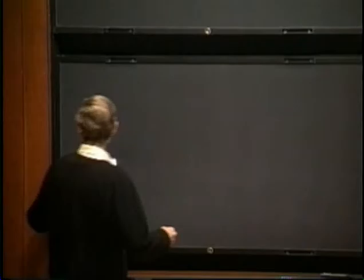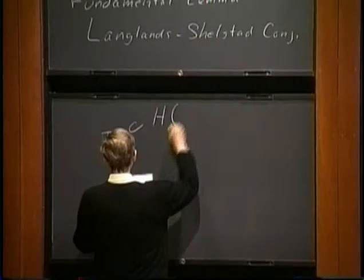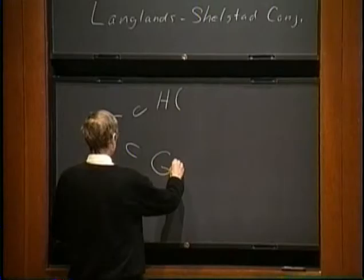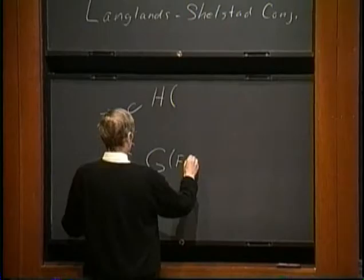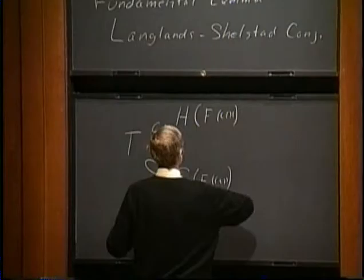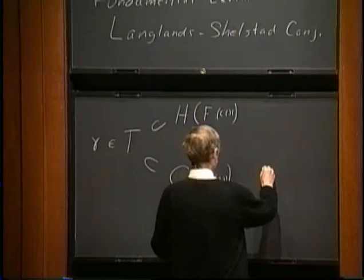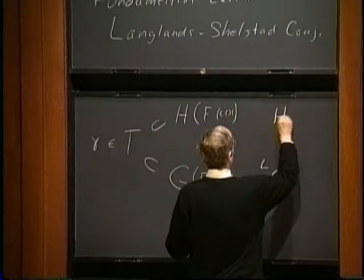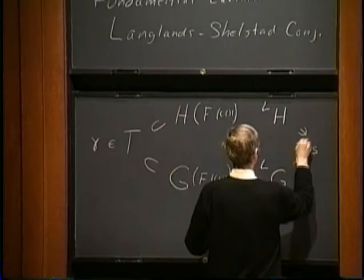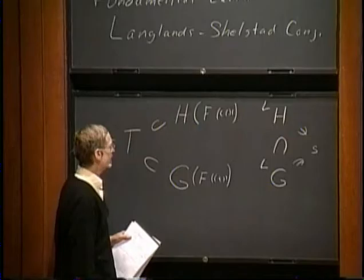The fundamental lemma refers to a situation like this: in our case we have a couple of groups G and H, with H called the endoscopic group. They're defined over a function field. They share a torus in common, and that torus has an element we focus on called gamma. If we look at the Langlands dual groups, the Langlands dual of H is included in the Langlands dual of G. In the classical situation, there's an element s so that the Langlands dual of H is the centralizer of s in the Langlands dual of G.